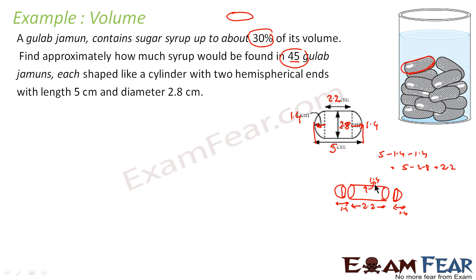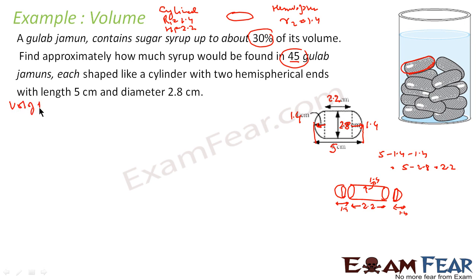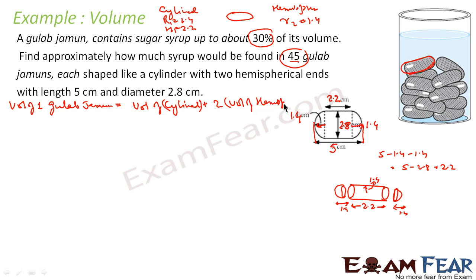So my mathematical representation is: one cylinder with r₁ = 1.4 and h = 2.2, and two hemispheres with r₂ = 1.4. Volume of one gulab jamun equals volume of cylinder plus 2 times volume of hemisphere, because there are 2 hemispheres.